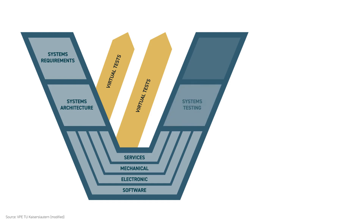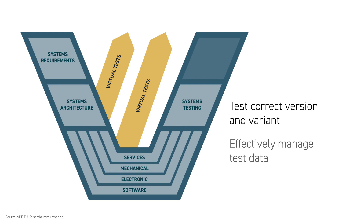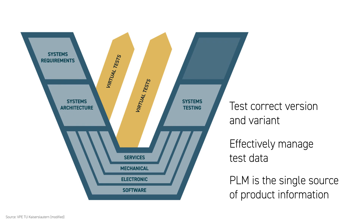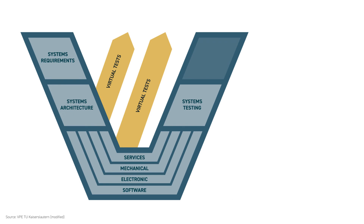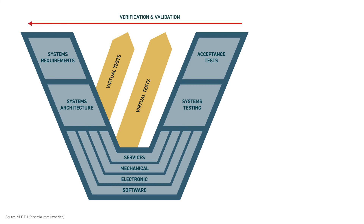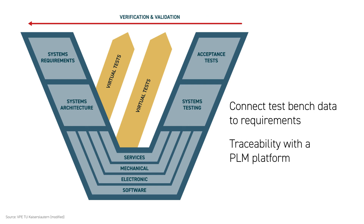Moving up the right side of the V-Model at systems testing, teams need to be sure they are testing the correct version or variant and effectively managing that test data. That means you've got to have the right product version, variant, and BOM at your fingertips. Your PLM platform is that single source of product information. It's even more critical at acceptance testing, particularly for verification and validation. Companies wrestle with connecting test bench data back to requirements, factoring in configuration changes and variants. This level of traceability can only be accomplished with the platform, and given the criticality for compliance and regulation, manufacturers need to get it right.